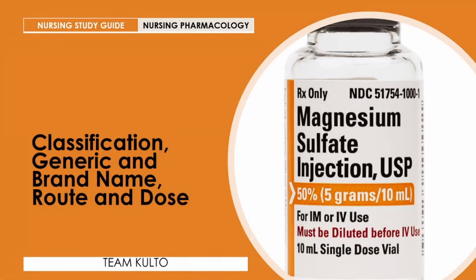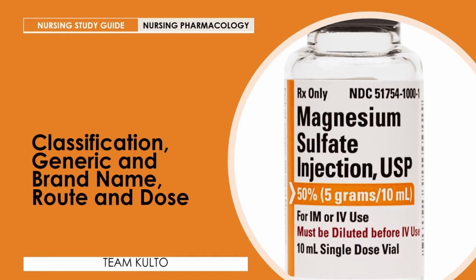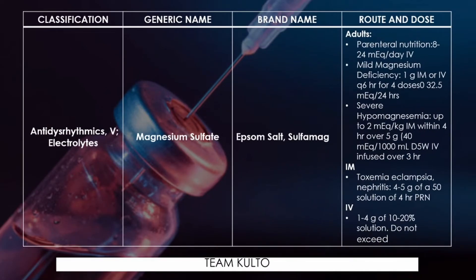Classification, generic name, and brand name, route and dose of administration — let's do this. In terms of classification, this medication MgSO4 is classified as anti-dysrhythmics and electrolytes — specifically magnesium. Generic name: magnesium sulfate. Brand name — there are actually two: Epsom salt and Sulfamag.